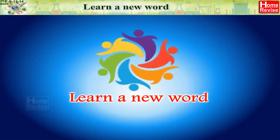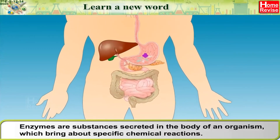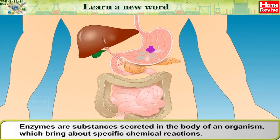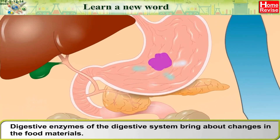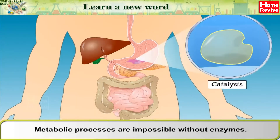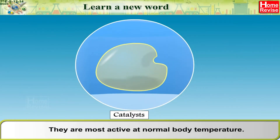Learn a new word: enzymes are substances secreted in the body of an organism which bring about specific chemical reactions — they act as catalysts. Digestive enzymes bring about changes in food materials, and metabolic processes are impossible without enzymes. Enzymes are a specific type of protein and are most active at normal body temperature.